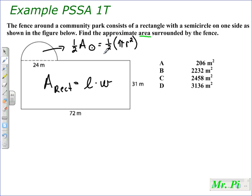So we need to find these areas, the area of a semicircle and the area of a rectangle. We'll start with the area of a rectangle because it's pretty simple. The area of a rectangle is equal to the length times the width, which in this case, the length is 72 meters times the width, which is 31 meters. When you do that multiplication, that gives 2,232 meters squared.